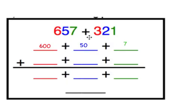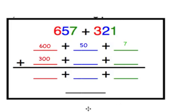Now let's take a look at 321. The value of the digit 3 in the hundreds place is 300. The value of the 2 in the tens place is 20. The value of the 1 in the ones place is 1. So 321 written in expanded form is 300 plus 20 plus 1.